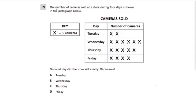This question says: the number of cameras sold at a store during four days is shown in the pictograph below. A pictograph is generally like this, where in one column we have the day or the time or something, and then next to it we have some kind of tally or frequency based on a picture.